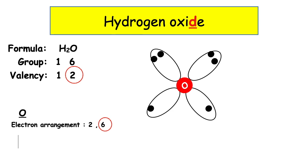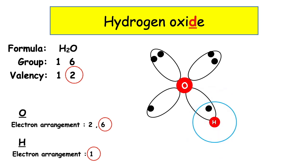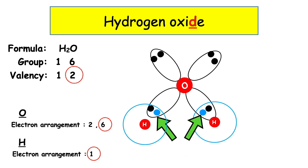Hydrogen has the electron arrangement 1. The electrons are found in the first energy level, so we're going to draw a circle. We need to overlap our circle with an unpaired electron found in the oxygen atom. From our formula we have a second hydrogen, which means we're going to have a second circle overlapping the second unpaired electron of the oxygen. We can see that we have two shared pairs of electrons, which means that water has two covalent bonds.